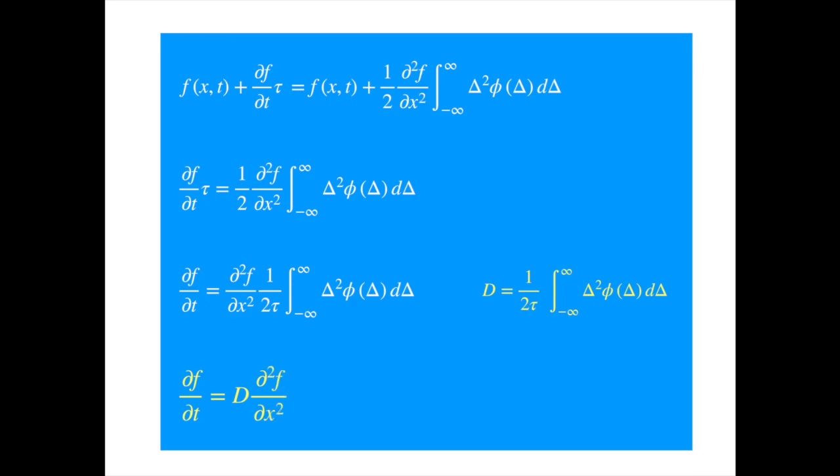So we have the microscopic interpretation of the diffusion coefficient, so it's just like the average of the displacement squared. Now the larger the D, the faster will the Brownian particles move. Now it's easy to see that the diffusion coefficient D will depend on the size of the particle, temperature and properties of the liquid. Things will be moving about faster at higher temperature for example, and bigger particles are likely to move less than smaller particles.